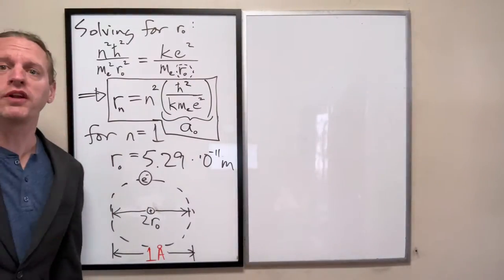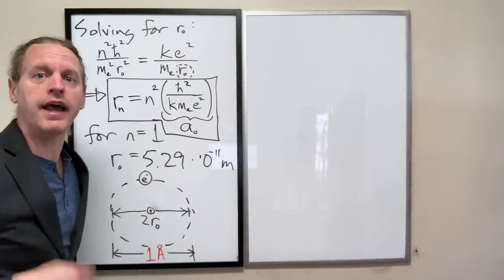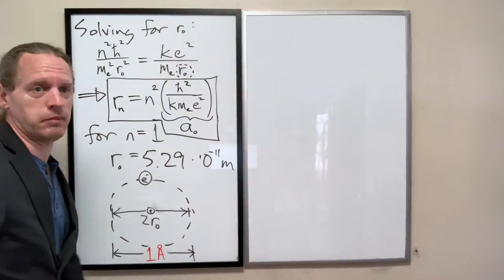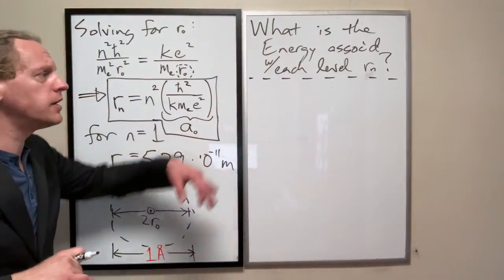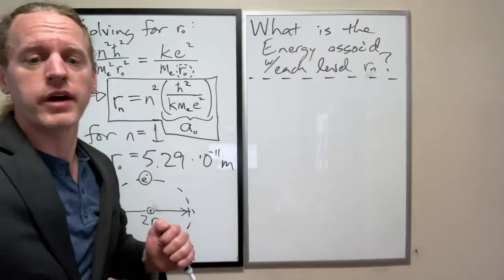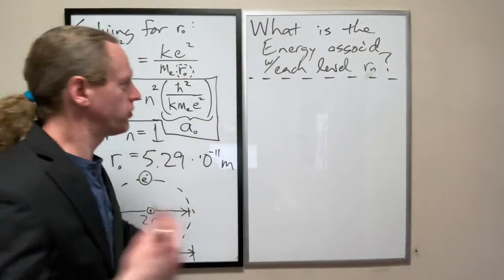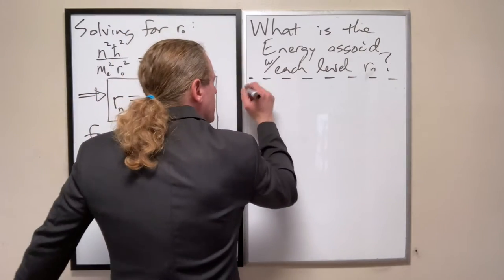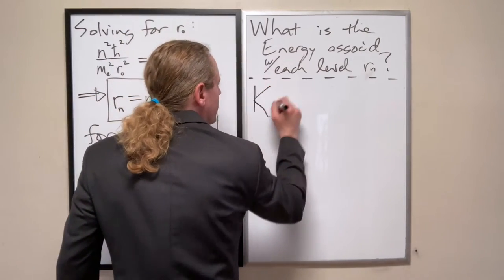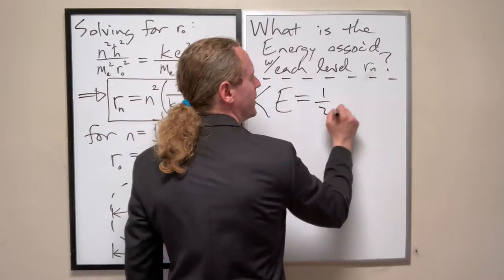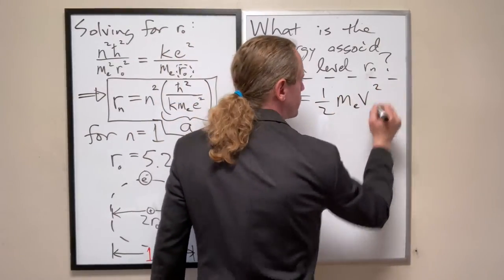Now what we're going to do is we're going to try to calculate the classical energies of this quantum system. So what we're going to do here, we're going to end up using, we're going to determine the kinetic energy of the electron. And so just as a reminder, the kinetic energy is always given as one half m v squared.